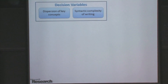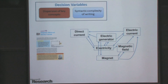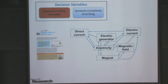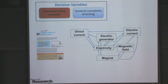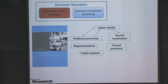Looking at many textbooks, we derive the intuition that if a textbook section is written well, the concepts in that section are all interrelated. For example, this is a section from a physics textbook on electric generators, and you can notice all the concepts are highly closely related. By contrast, here is a section from a social science textbook where some concepts like Adam Smith and economy are related, but others like caste system, forest produce, and Adam Smith are highly disconnected.